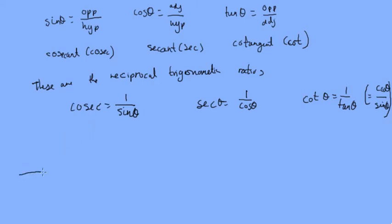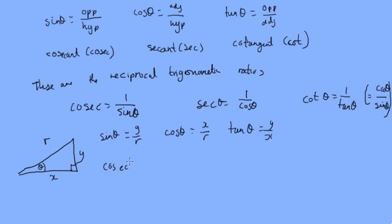Now, let's consider our right angle triangle, where this is theta, this is x, this is y, and this is r. So, we know sine theta is y over r, cosine theta is x over r, and tan theta is y over x. Now, cosec theta is r over y, sec is r over x, and cot theta is x over y.